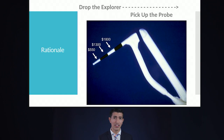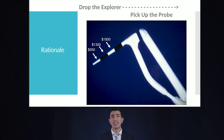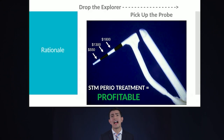Next time you go into your office, pick up that probe and look at it this way. We really don't like talking about money as dentists, but here's what it means: a 3-millimeter pocket is about $500; 6-millimeter pockets are about $1,300; anything above that is really $1,800. The STM program shows you how to make periodontal treatment profitable — but it's profitable because you're helping your patients.